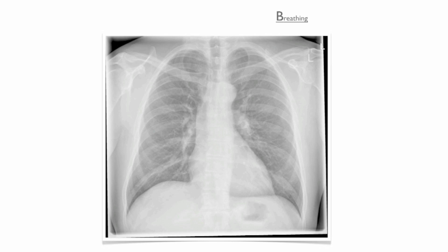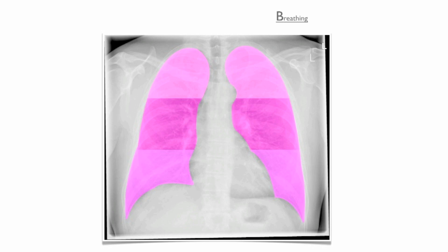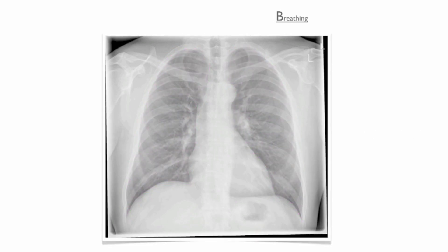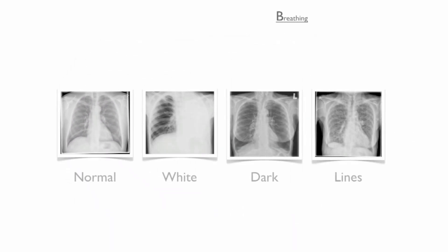Having reviewed airway abnormalities, the next step is to look at breathing. Quickly scan all six lung zones. Compare them and consider whether they appear normal, too white, too dark, or have too many lines.